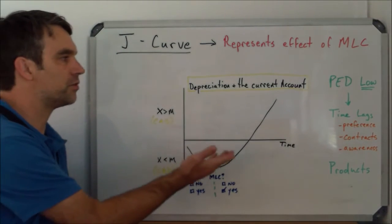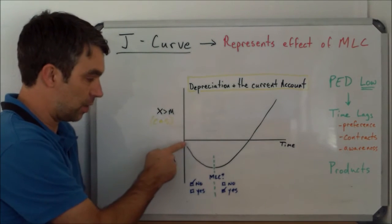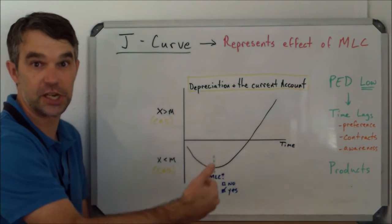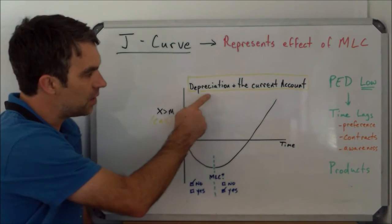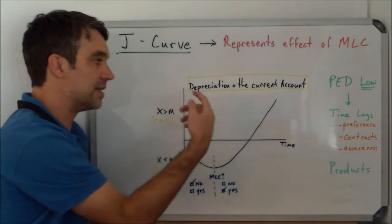What the J-curve shows is that when depreciation is happening—and the moment when you start drawing the J-curve, that's the moment the depreciation begins—the effect that depreciation will have on the current account is initially...